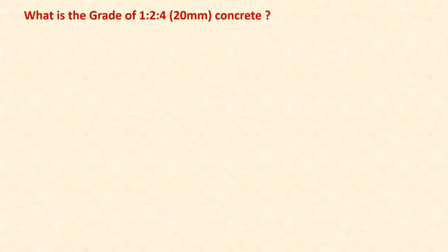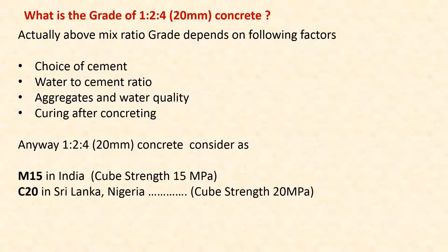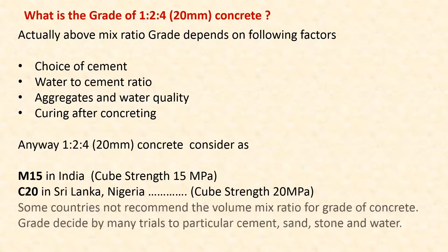What is the grade of 1:2:4 20mm concrete? The grade of this mix ratio depends on the following factors: choice of cement, water-to-cement ratio, aggregates, water quality, and curing after concreting. 1:2:4 20mm concrete is considered M15 in India (cube strength 15 MPa) and C20 in Sri Lanka and Nigeria (cube strength 20 MPa). Some countries do not recommend volumetric mix ratios; grade is decided by many trials for the particular cement, sand, stone, and water.